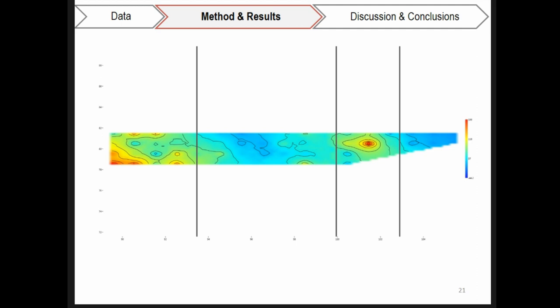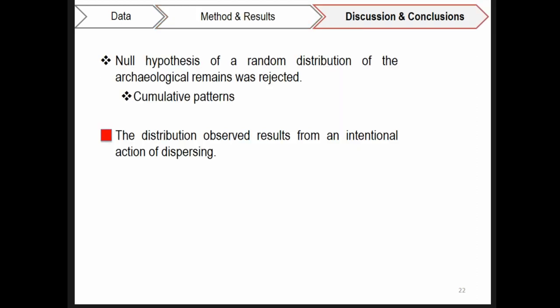Jointly, the predictive models obtained suggested a spatial organization in four different associated zones: Mytilus, fauna, Mytilus, and fauna again, and all the associated different artifacts.